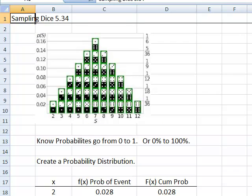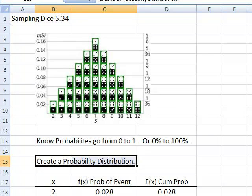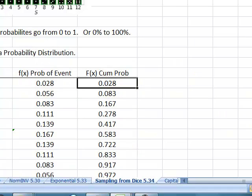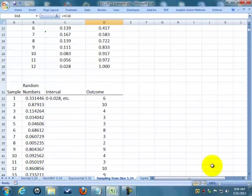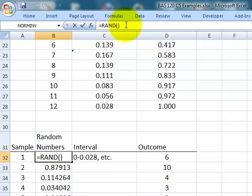Let's talk about sampling dice now, example 5.34. This is how we can create a probability distribution from discrete numbers. Probabilities go from 0 to 1 or 0 to 100%. We can create this probability distribution because we know the probability of this event is 1 in 36. And we can do a cumulative, which just adds them all up. Let's take 100 samples and get a random number. The way you can do a random number in Excel is you just say the function RAND, and it'll give you a random number between 0 and 1.